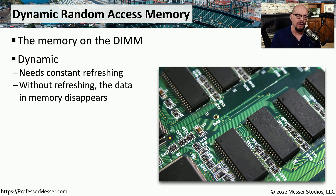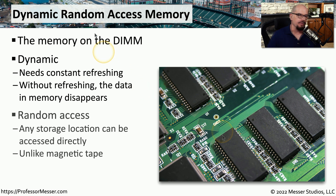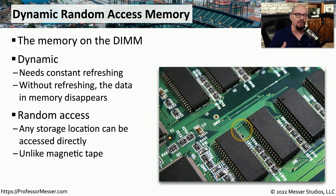This is the memory itself, and we often refer to it as dynamic random access memory, or DRAM, because it constantly needs to be refreshed so that the data does not disappear. There must always be a power source providing that refreshing of the information in these memory modules. The 'random' part of random access memory means we can access any data on any part of this module simply by requesting it — we don't have to fast-forward or rewind through the module.